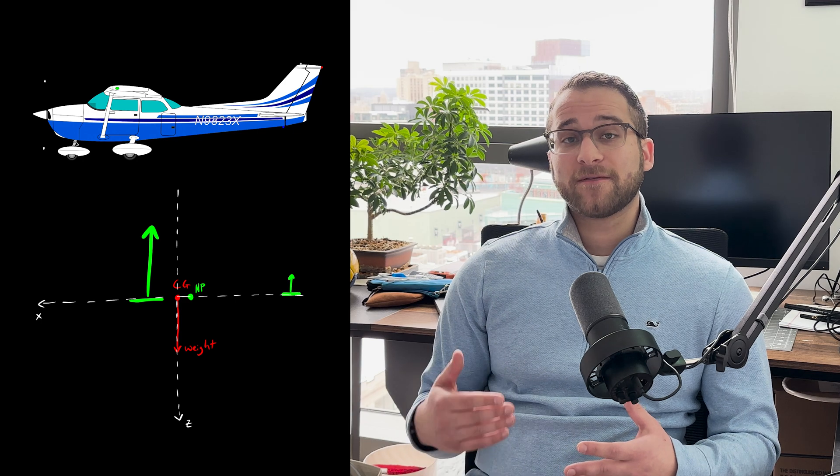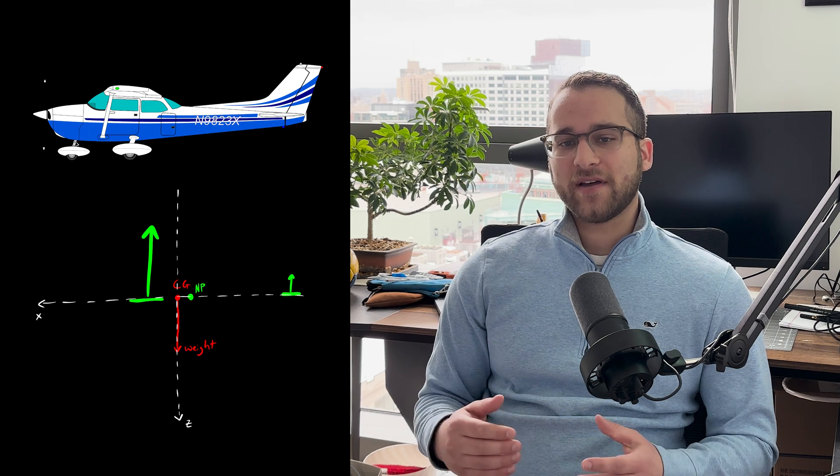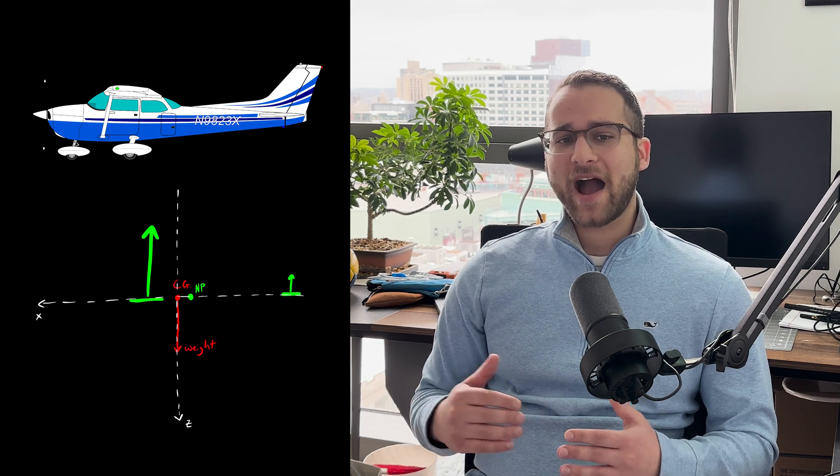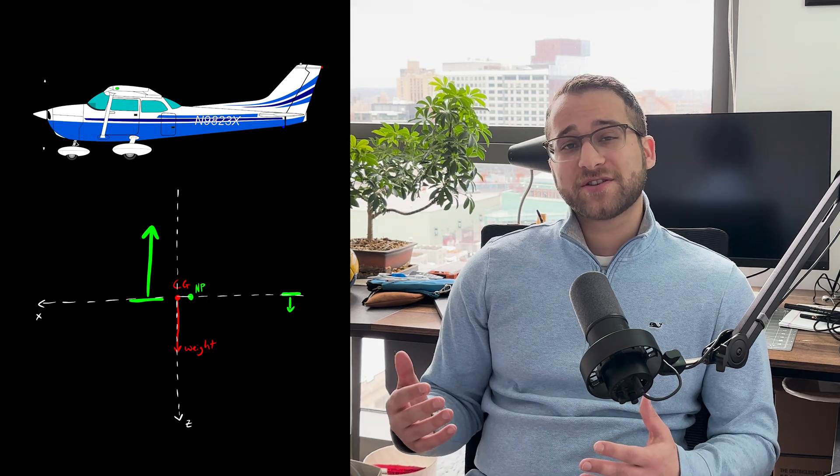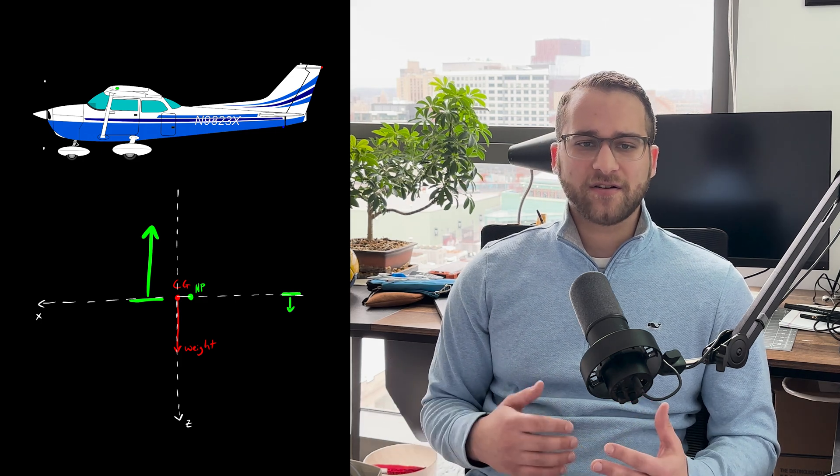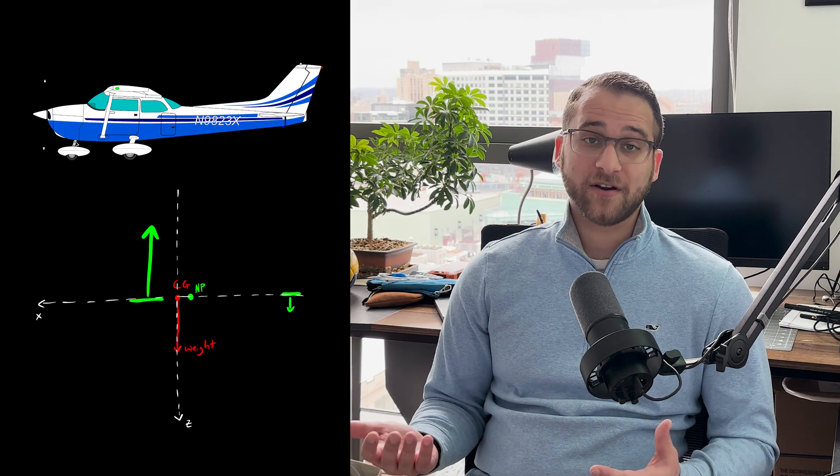That's why most conventional aircraft, the center of gravity is placed in front of the neutral point, or rather the neutral point is placed behind the center of gravity. This means that the horizontal stabilizer at the back actually pushes downward. Yes, downward. It's creating negative lift to balance the aircraft, which seems inefficient because you're working against yourself, but this configuration is stable.